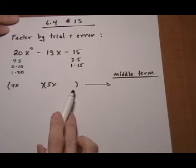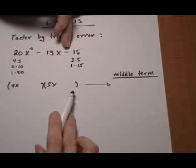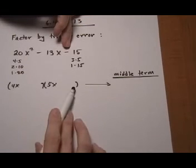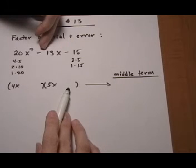Let's see if we can get the signs to help us. Minus 15 has to be the product of the two last pieces. That means they have to be opposite signs, and they have to add up to be a negative 13.